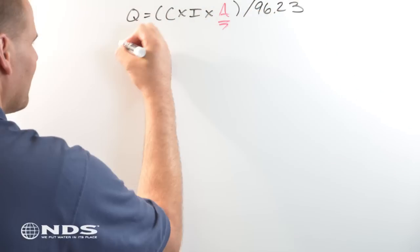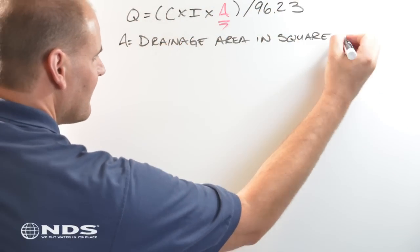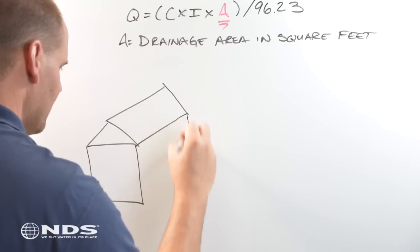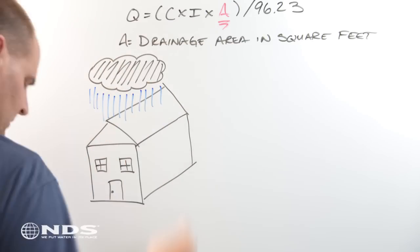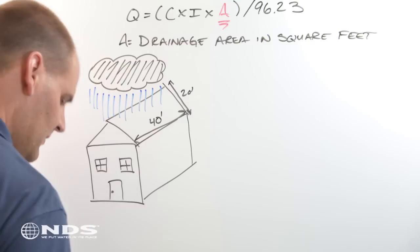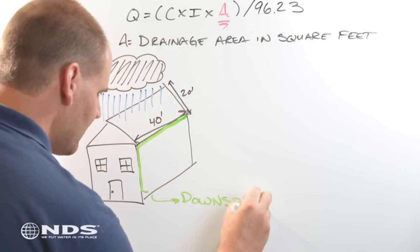A is the surface area where the runoff water is coming from in square feet. The square footage for one half of the roof of the house shown here is 40 feet by 20 feet, which equals 800 square feet.